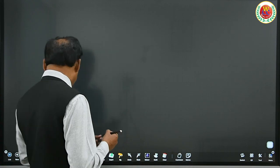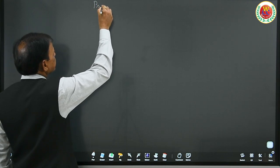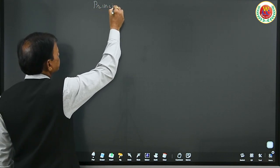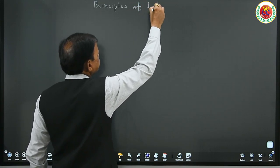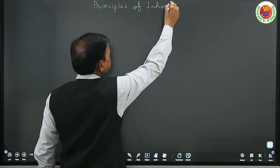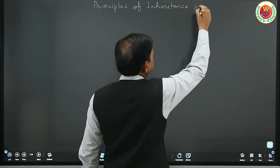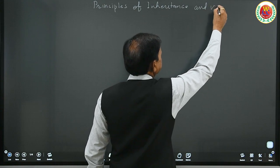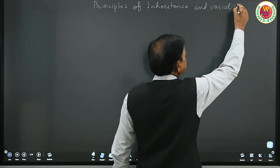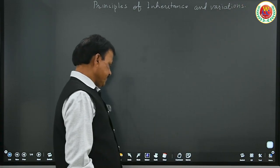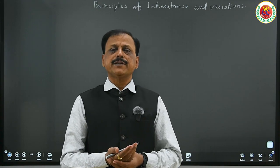No doubt, as a chapter, it is called principles of inheritance and variations. Instead of saying only inheritance, it can be said as principles of inheritance and variations, which is very important. Here, Gregor John Mendel is the one called the father of genetics.